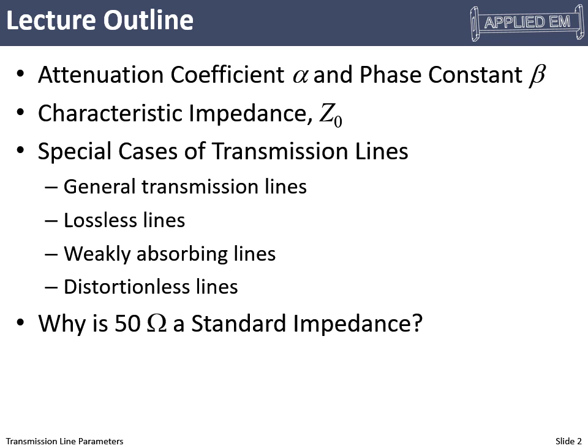We'll look at some special cases then, like lossless, weakly absorbing, and distortionless, and we'll end with a discussion of why we use 50 ohms as a standard impedance for transmission lines.